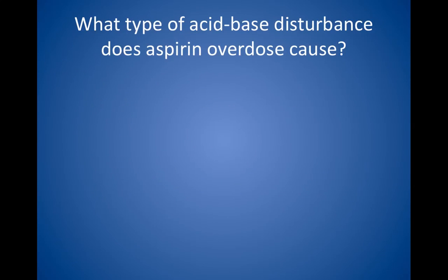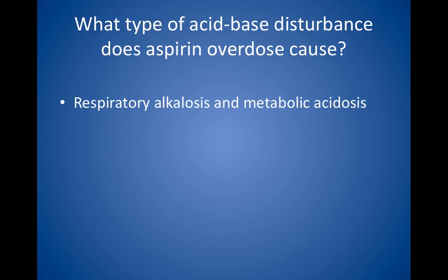What type of acid-base disturbance does aspirin overdose cause? It results in a respiratory alkalosis and metabolic acidosis, which are two different primary disturbances. Look for coexisting tinnitus, hypoglycemia, vomiting, and a history of swallowing several pills. Alkalinization of the urine with bicarbonate speeds excretion.